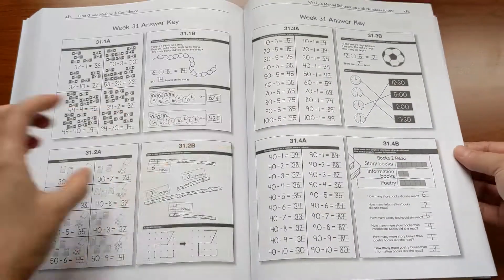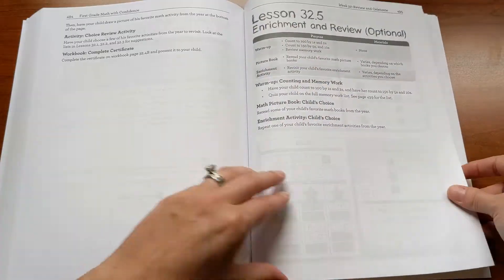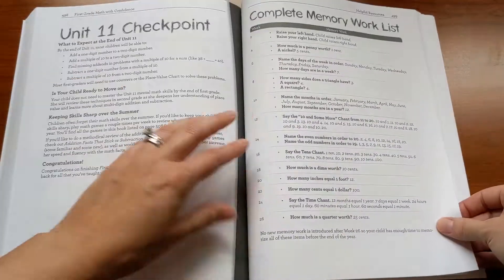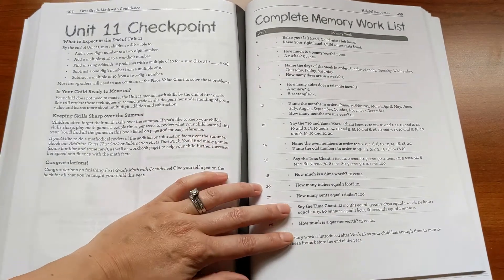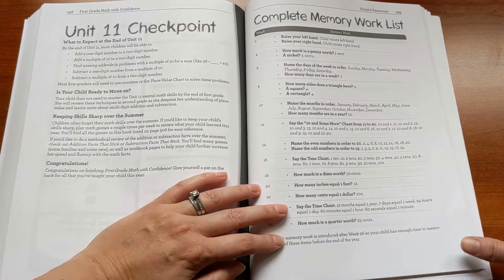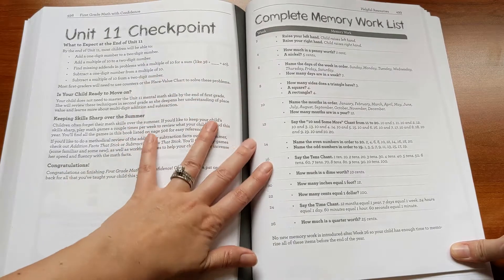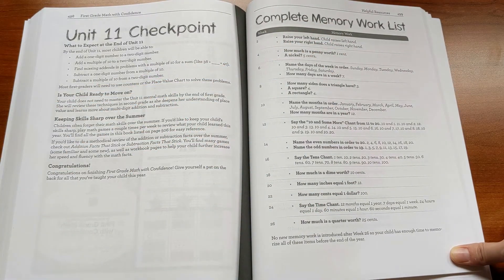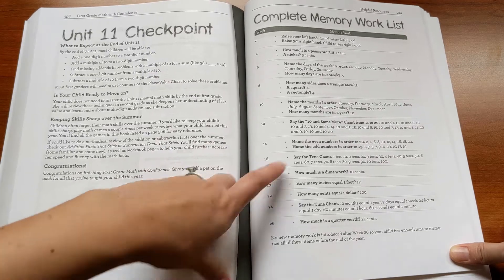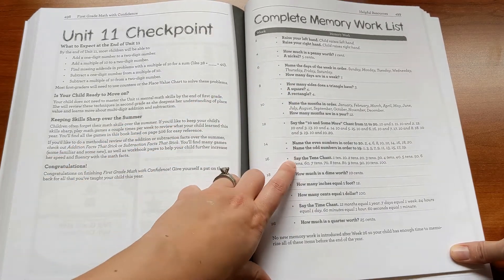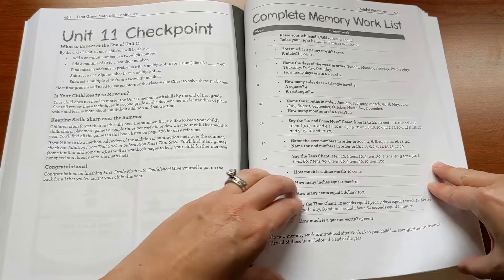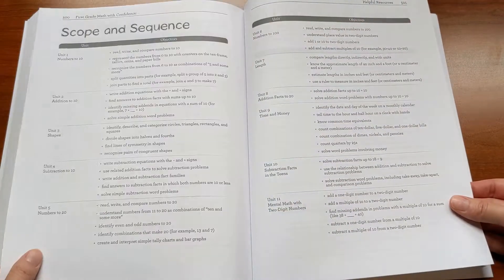And so there's 32 weeks in the program. And then at the end there is a section called Helpful Resources, where I put together just lots of the lists that make it easier to teach that you can refer to. One thing that's included in the book is memory work, where your child will just memorize some important facts about math. Things like how many sides a triangle has, say the tens—one ten is ten, two tens is twenty—how many cents equal a dollar. So that's all listed in the back.